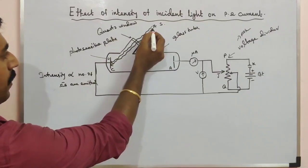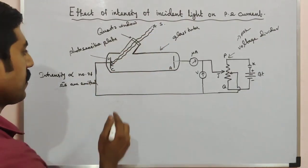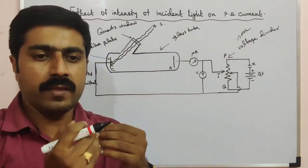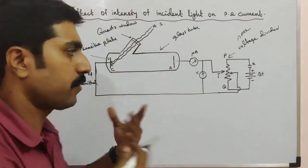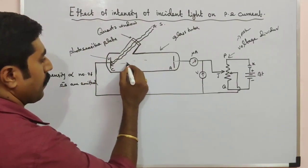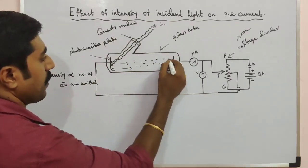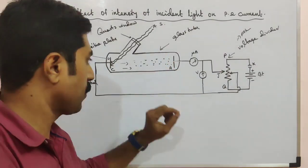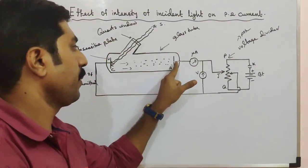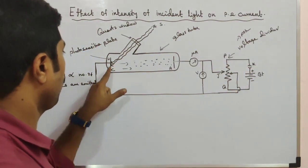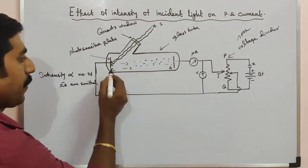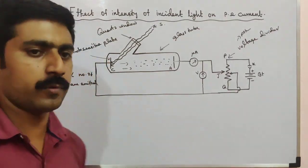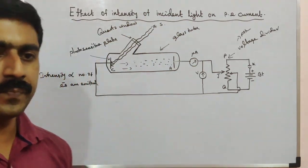In the experiment, electromagnetic radiation hits the cathode. Electrons are there inside the cathode — they gain extra energy, break the surface barrier, and are emitted. These electrons are then attracted by the positive terminal plate, which is the anode. The radiation intensity from the metal surface is directly proportional to the number of electrons emitted.